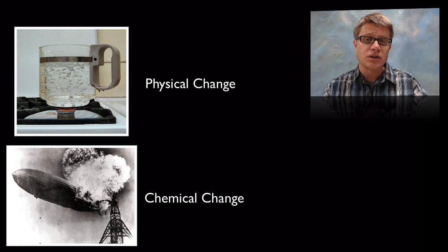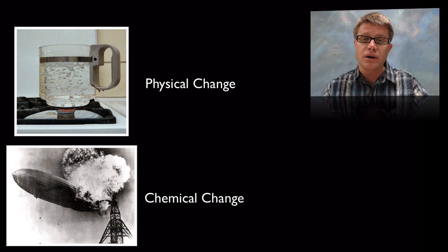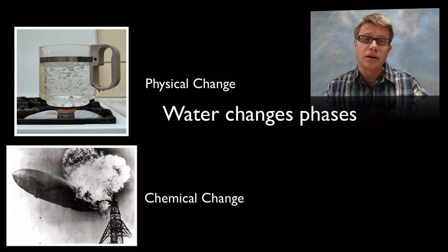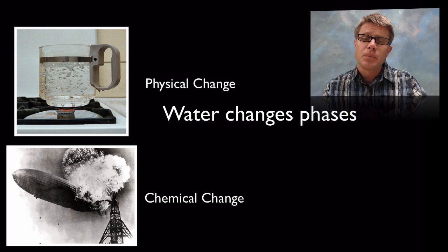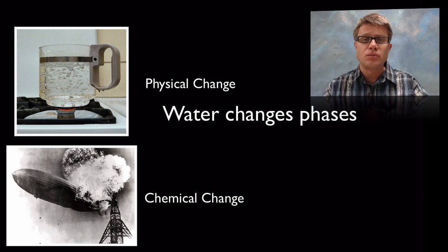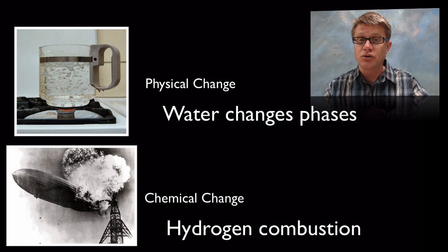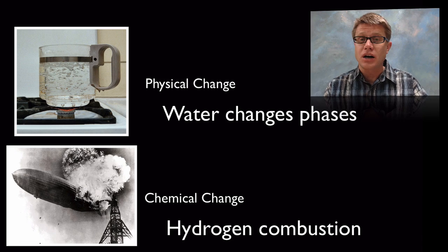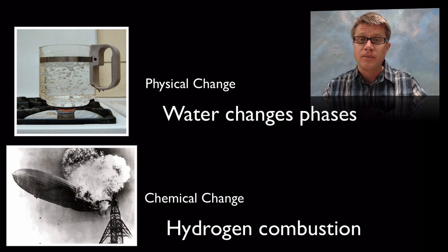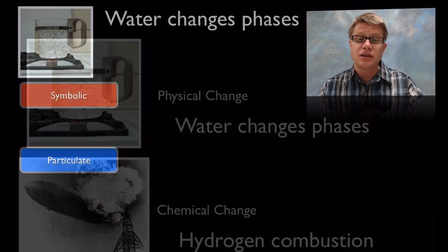If we're looking at physical versus chemical changes, an example of a physical change could just be boiling of water. We're changing water into a different phase, from a liquid into a gas phase. But a chemical change is going to require the breaking and forming of new bonds. An example of that could be the combustion of hydrogen found in the Hindenburg explosion. The hydrogen and oxygen are combining to make water, and so we don't have hydrogen gas anymore.